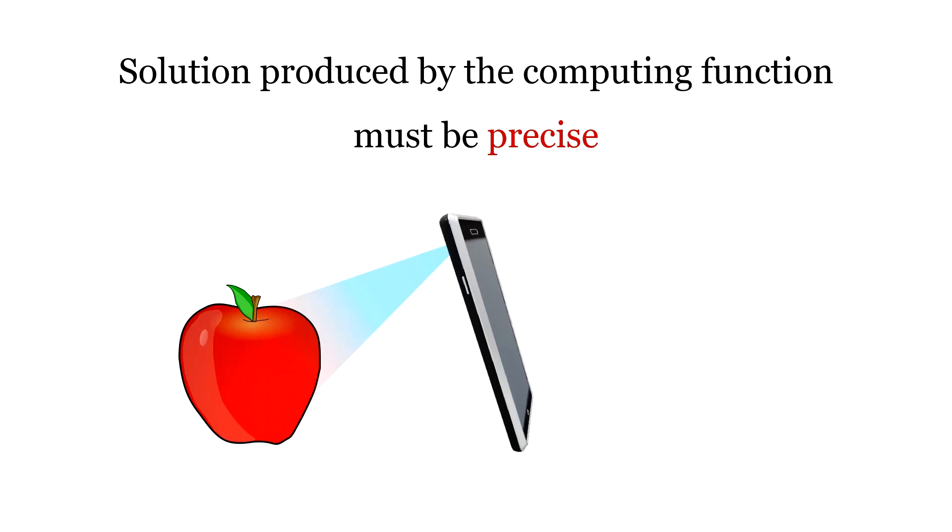Now according to computing, the solution produced must be precise. So if it is scanning an apple, it must identify the object as apple only.